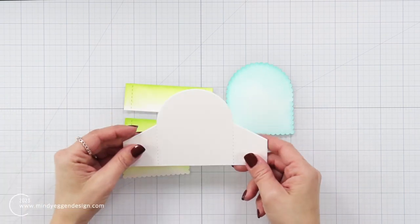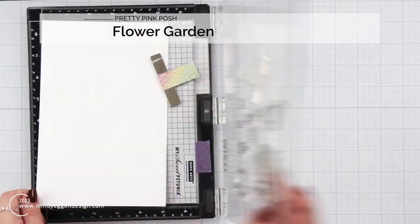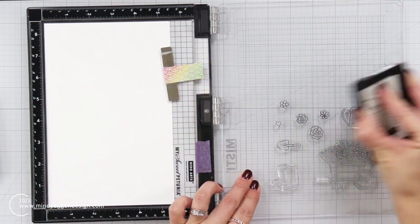Now that I have my main pieces kind of ink blended and die cut out, I'm going to stamp and color some images. So here I placed down a bunch of images off of the flower garden stamp set.